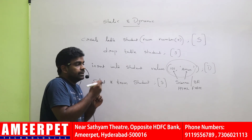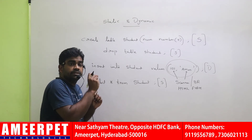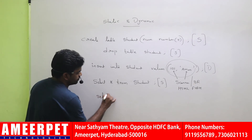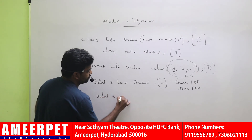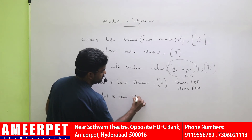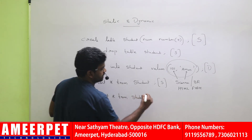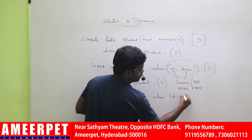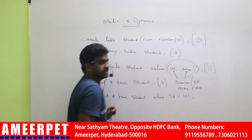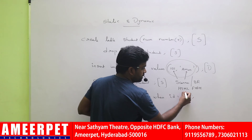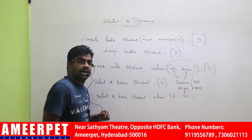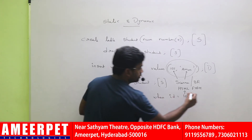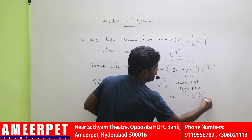Suppose I want to display the student details with a particular ID number: SELECT * FROM student WHERE student ID = 101. This value — the ID — is being read either by using the scanner class or from the HTML page. So this is called a dynamic query.